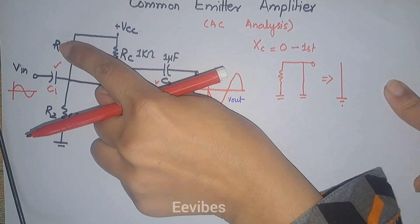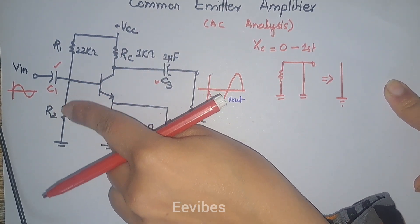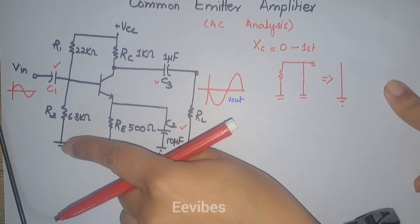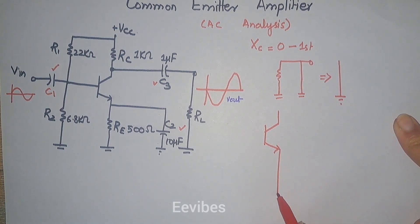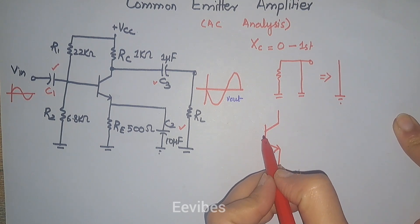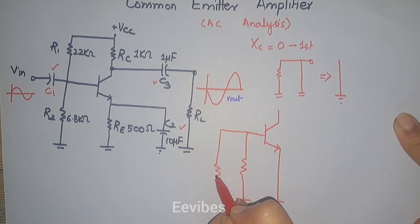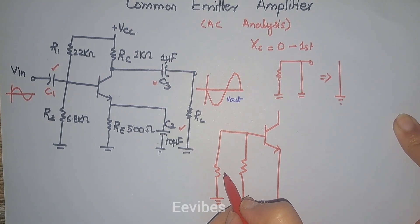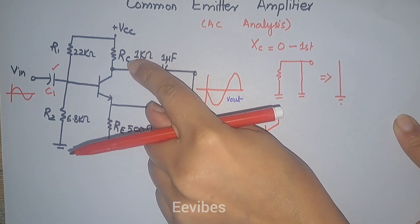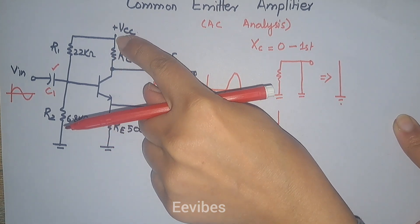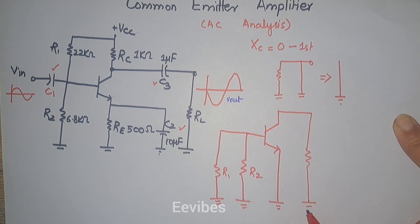We replace the DC source with ground, which is the common point of the circuitry. One terminal of R1 is at the base and the other is at ground; similarly one terminal of R2 is at the base and the other is at ground. The emitter is replaced with ground, R1 and R2 appear at the base, and one terminal of RC is at the collector while the other is at ground.